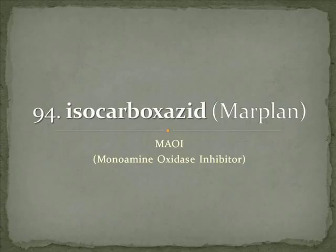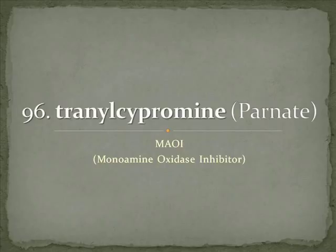Isocarboxazid is Marplan — that's an MAOI, or monoamine oxidase inhibitor. Phenelzine is Nardil, another MAOI, and tranylcypromine, Parnate, is another MAOI. I have a couple of tips on how to remember these, but these might take a bit of repetition.